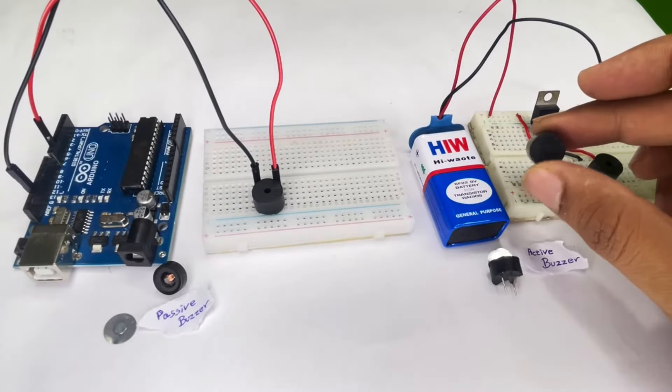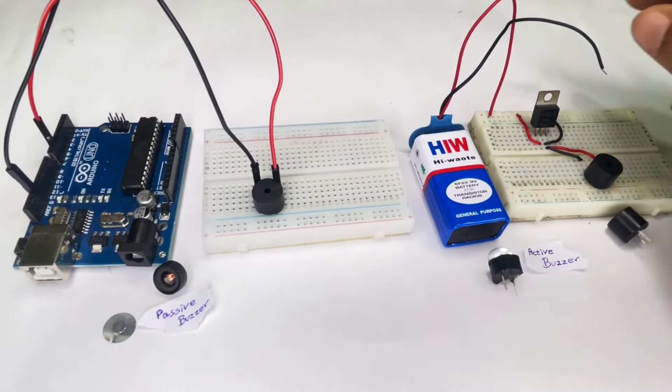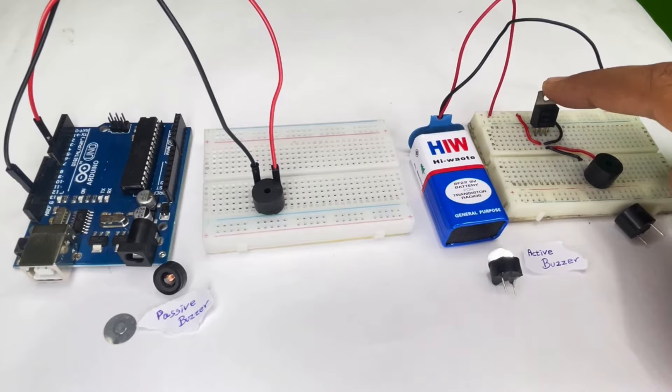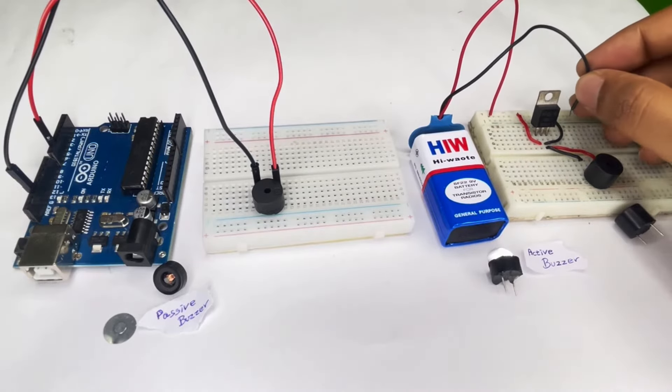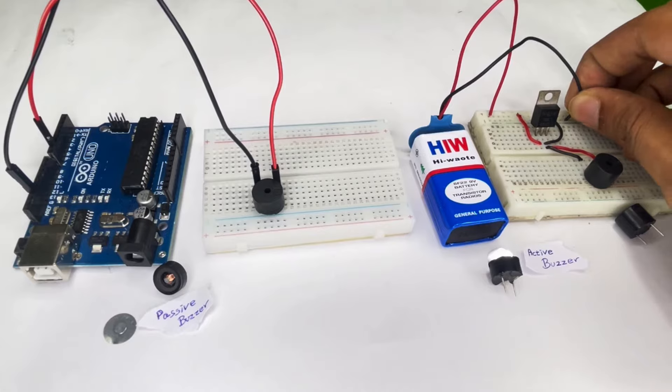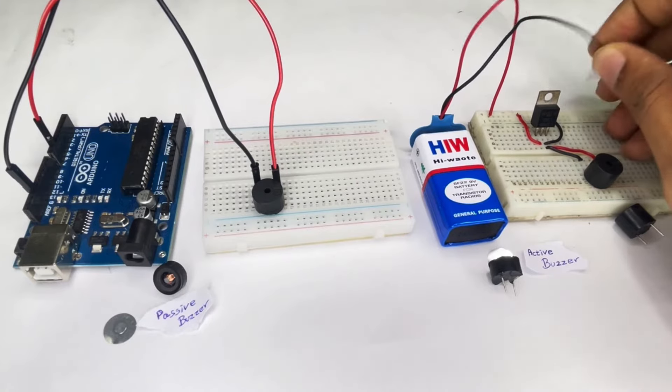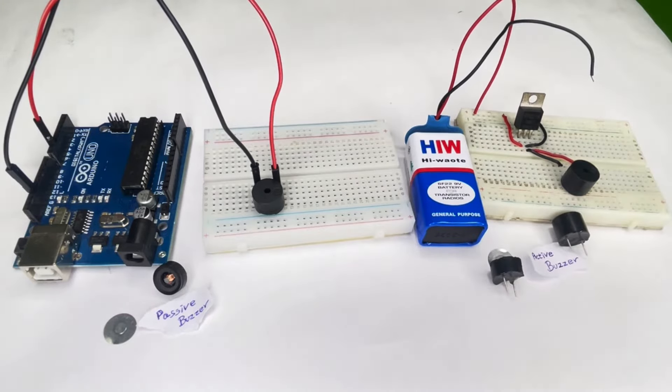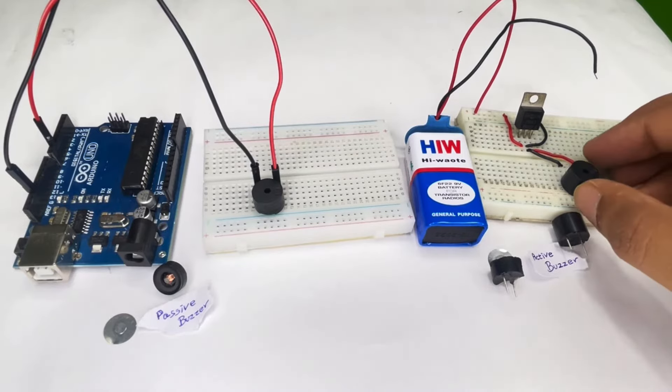We have an active buzzer here. Let me quickly power it on with this 9 volt battery and this 5 volt voltage regulator. As you can see, as soon as I power it on with the battery, you can see that the buzzer makes a sound.